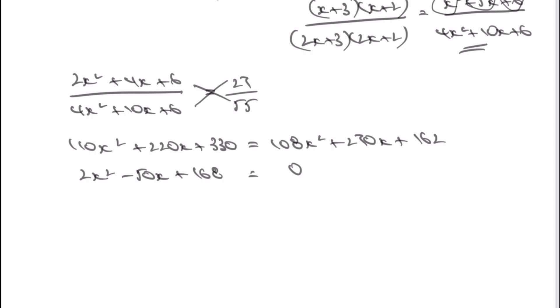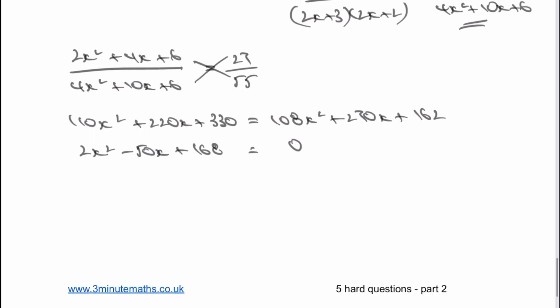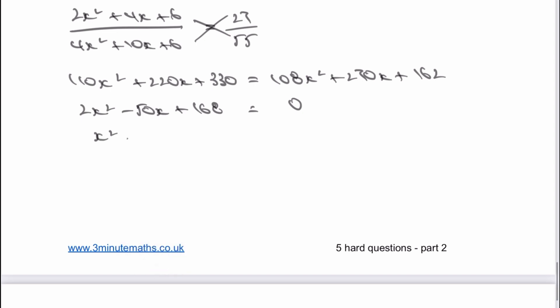It's just a case of factorising that particular quadratic. Two numbers that multiply together to make positive 84 and add together to get minus 25 are x minus 21 multiplied by x minus 4 equals 0. Therefore, I've got two values of x. I've either got x equals 21 or x equals 4.